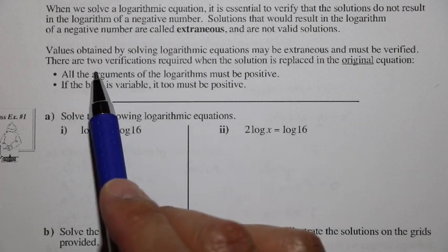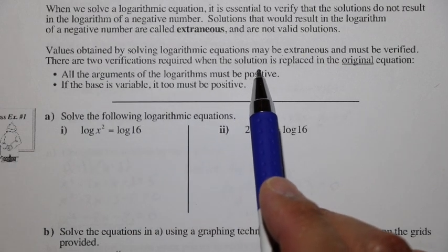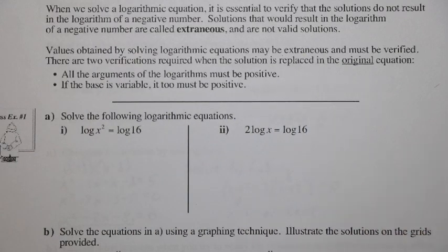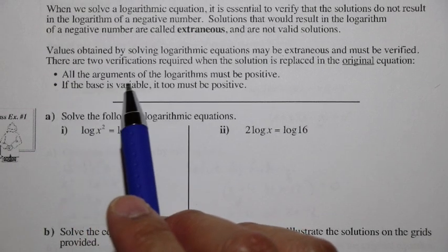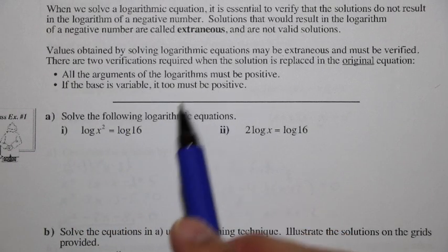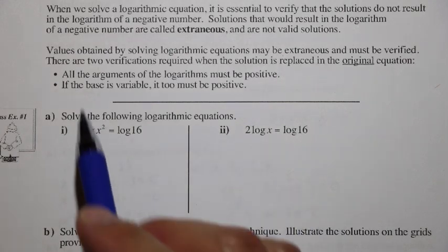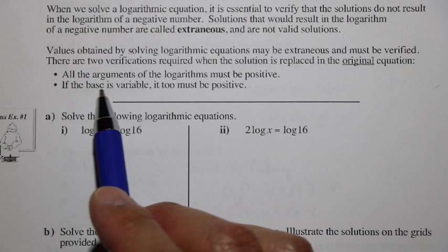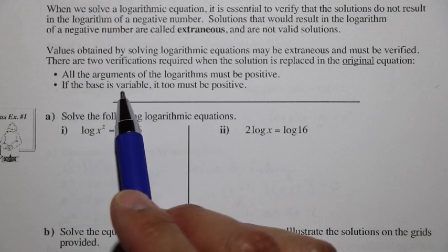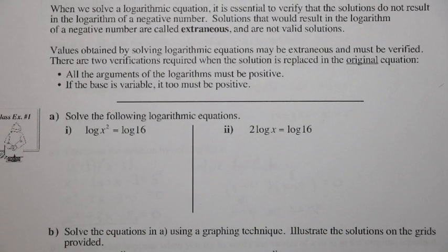Two verifications are required when the solution is substituted back into the original equation: first, all arguments of the logs must be positive — we cannot take the log of a negative number. Second, if the base is a variable, it too must be positive.